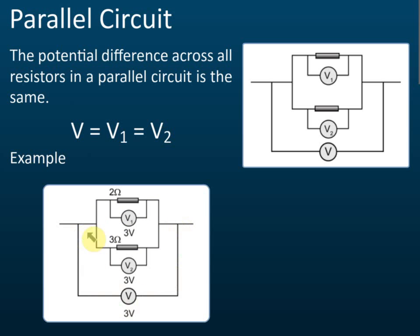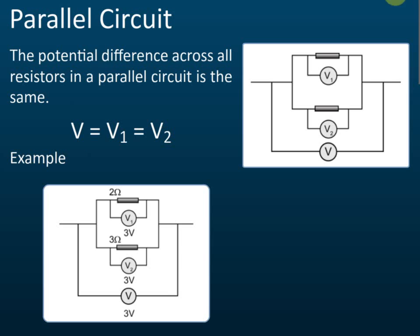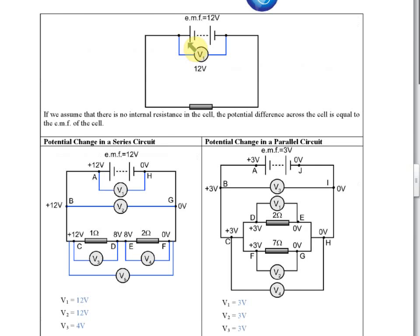For a parallel circuit the potential difference is the same across all branches — 3 volts here, 3 volts there, and 3 volts overall. For a series circuit you add them up: V1 plus V2 equals V. For a parallel circuit, V1 equals V2 equals V. Make sure you really understand these two rules, because they are very important in understanding circuits.